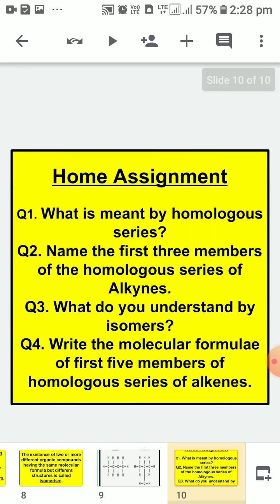Now children, as we finish the topics for this session, here is the home assignment. Questions are: What is meant by homologous series? Name the first three members of the homologous series of alkynes. What do you understand by isomers? Write the molecular formulae of the first five members of the homologous series of alkenes. Write down all these notes and find out answers for these questions.